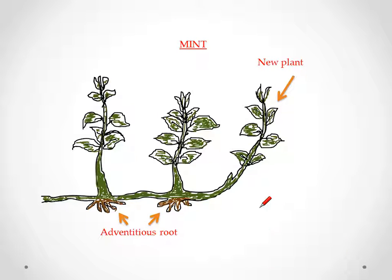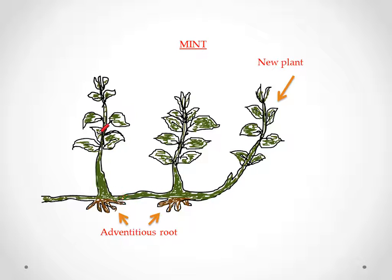Next are suckers — here we take the example of mint. Roots develop, and in this way a new plant is developed from the present plant.